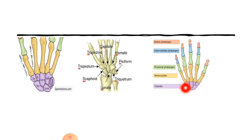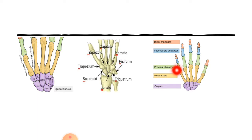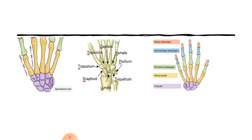You can appreciate the metacarpal bones, and the metacarpal bones have a base, a shaft, and a head. Then come the proximal phalanges, intermediate phalanges, and distal phalanges. In the thumb, we have the proximal and distal phalanges only — the intermediate phalanges are absent in the thumb. So there will be a total of 14 phalanges in the hand.